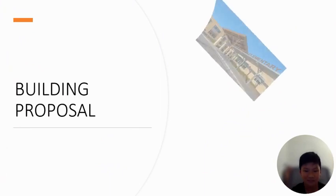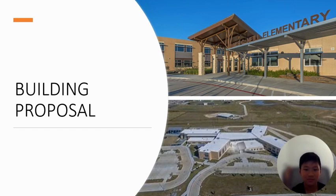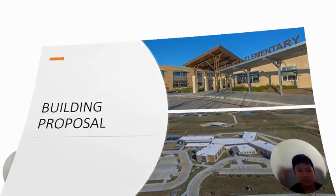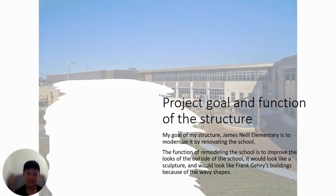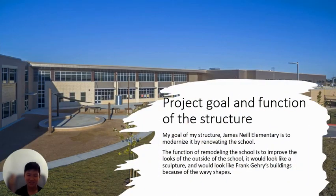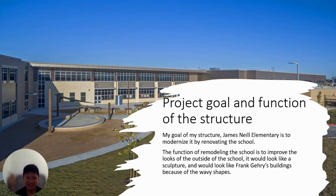Building proposal. Project goal and function of the structure: my goal for my structure, JMC Neal, is to modernize it by renovating. The function of remodeling the school is to improve the looks of the outside to make it look like a sculpture, resembling Frank Gehry's buildings because of his wavy shapes.